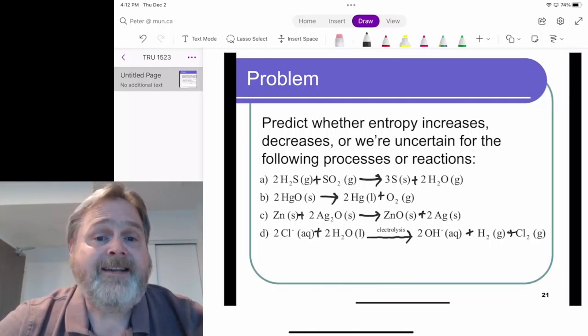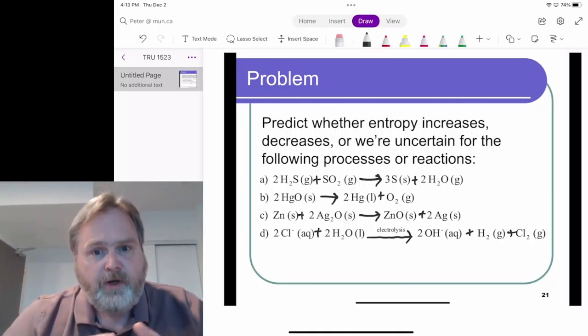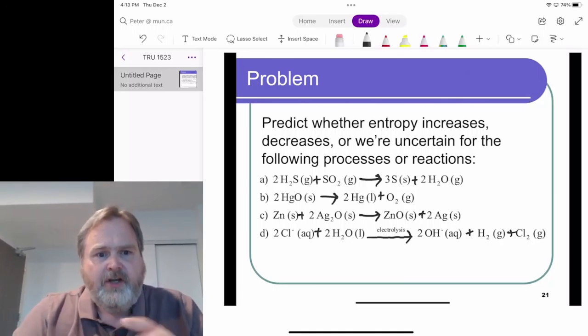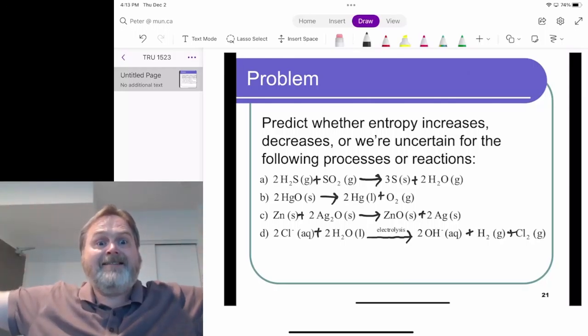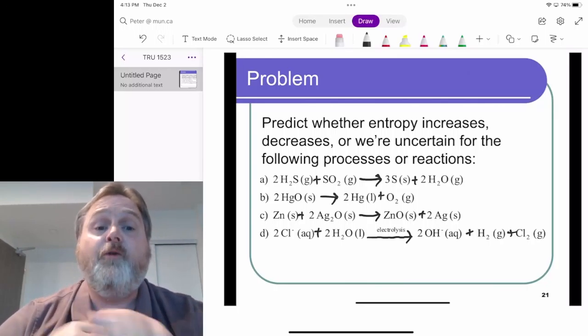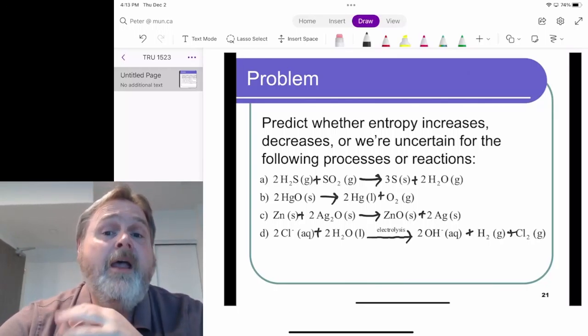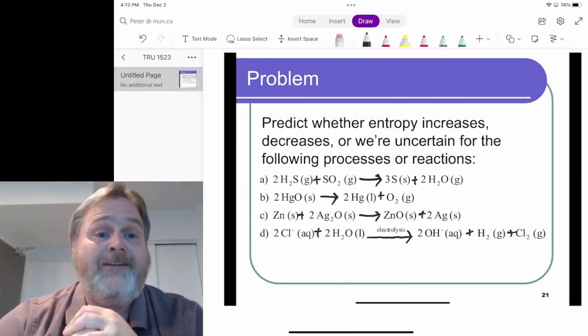For question B, where we take two mercury oxide solid and get mercury liquid and O2 gas, it's going to be the same idea. We're going from this little pile of solid to this liquid that could move around in the container, and this gas that can fill the room. That's a whole lot more freedom of motion for the energy contained in the system. So I would predict that the entropy increases for reaction B.